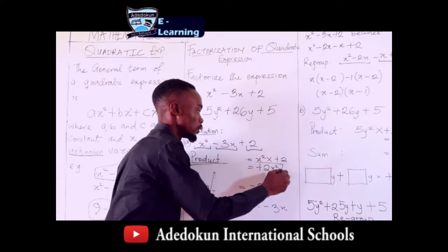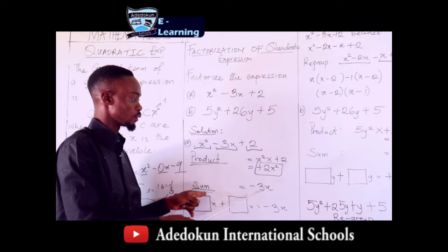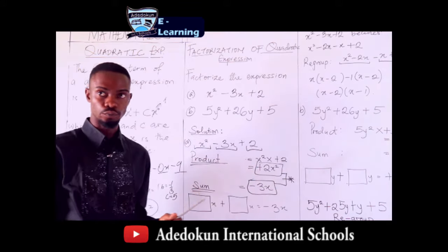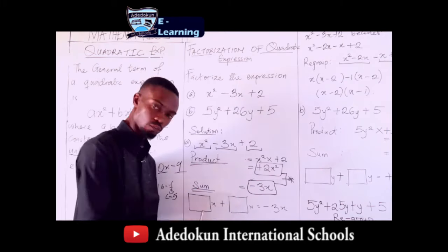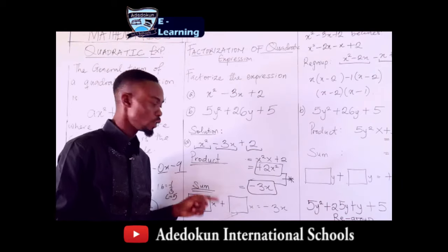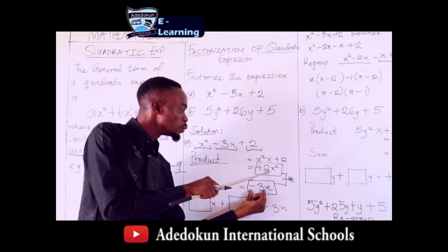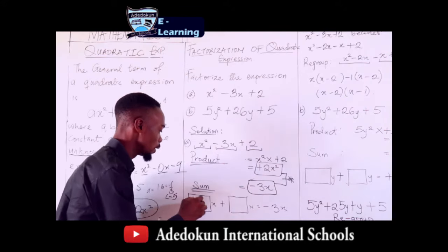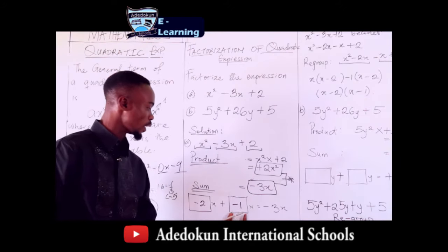The sum is always the order one term, which is minus 3x. Now you need to do a little brain work: think of two numbers whose product gives you 2 and whose sum gives you minus 3. If you think carefully, you will find those two numbers are minus 2 and minus 1, since (−2)×(−1) = 2 and (−2)+(−1) = −3.